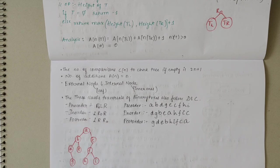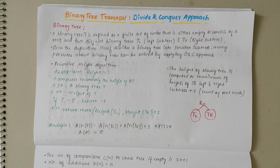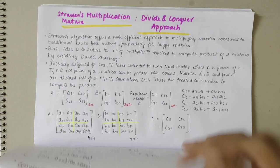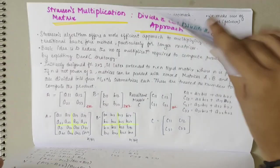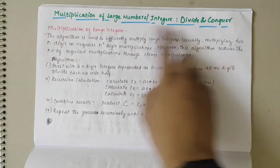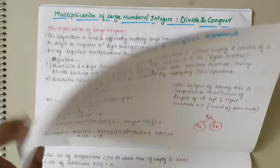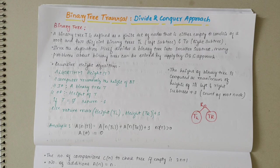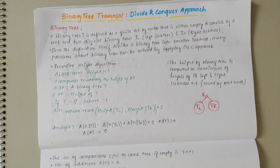These traversals could be asked in exams and it's a fairly simple topic that we have also studied in data structures. If you have any doubts, do let me know in the comments. In this video we have covered binary tree traversal, Strassen's matrix multiplication, and multiplication of large numbers — all three using the divide and conquer approach. Stay tuned to my channel, subscribe, and thank you.